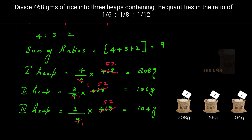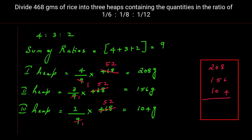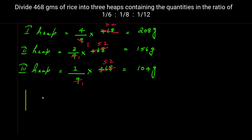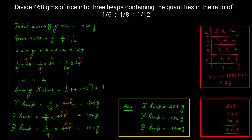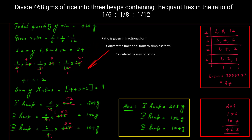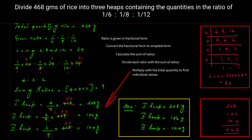To verify, sum all three heap quantities and check it equals the total: 208 + 156 + 104 = 468 grams. Correct. To summarize: whenever total quantity and a fractional ratio are given, convert the ratio to simplest form using LCM, find the sum of ratios, then divide each ratio by the sum and multiply by the total.